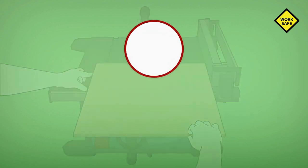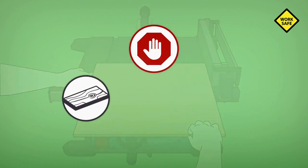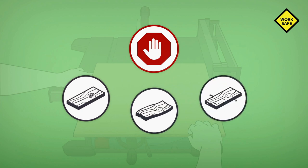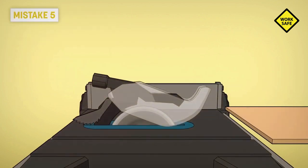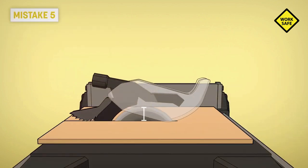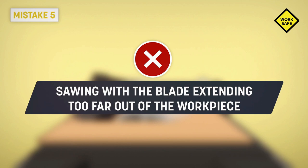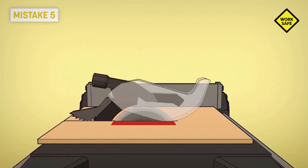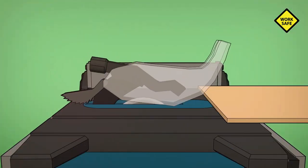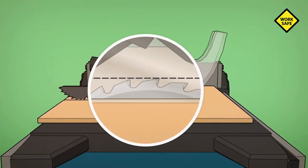Put aside all workpieces that have loose knots, defects, nails, or foreign objects. Mistake five: sawing with the blade extending too far out of the workpiece. The larger the contact area with the blade, the higher the risk of binding and kickback. Adjust the blade so that it's one eighth of an inch higher than the top of the workpiece.